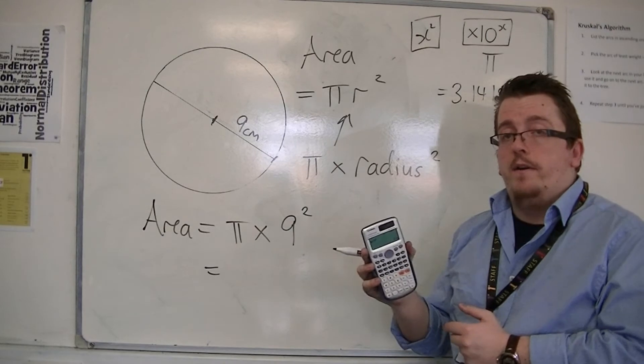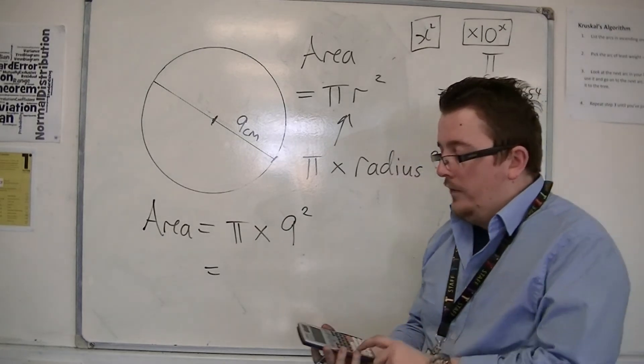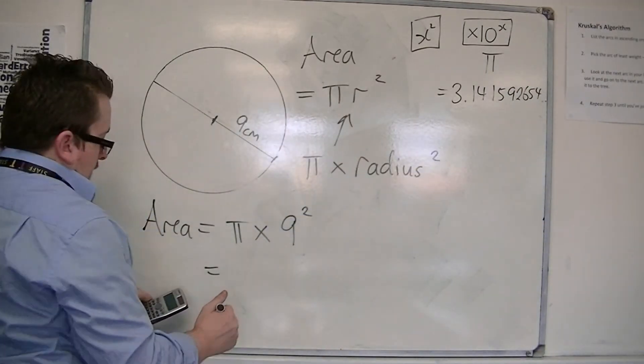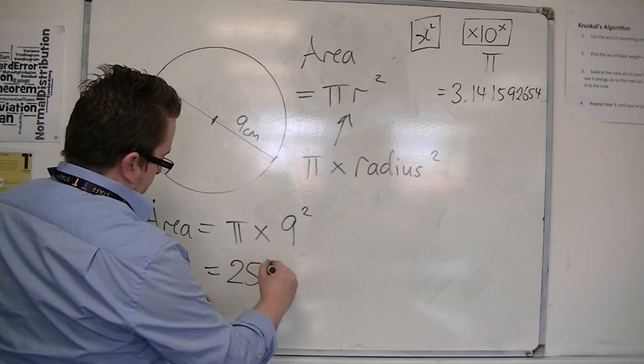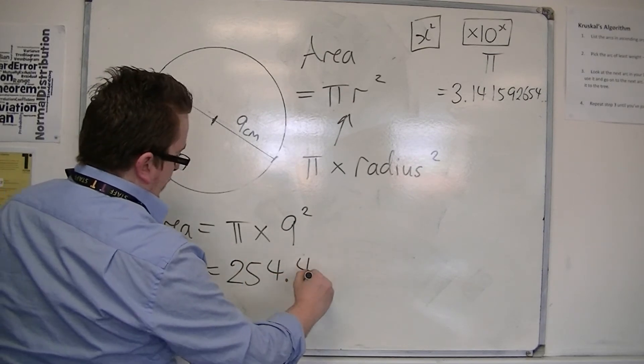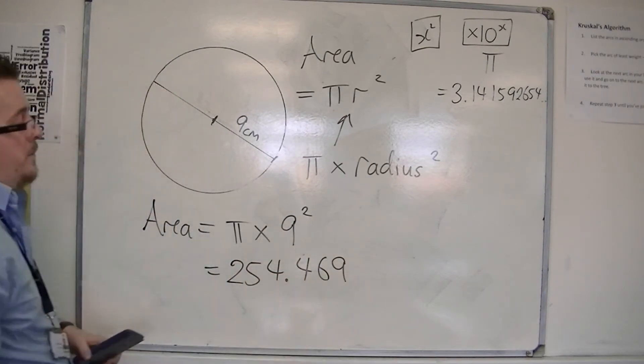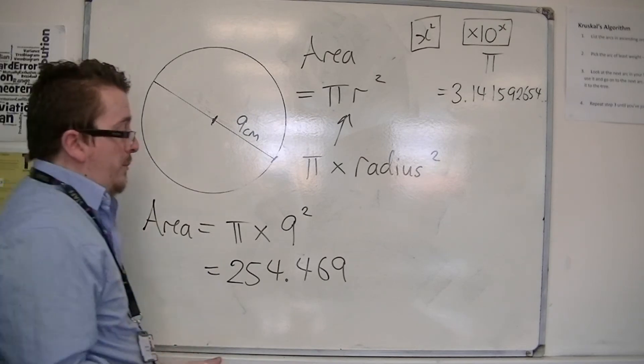Now you should get 81 pi arriving on your calculator. So then press the SD button, and you'll find you get 254.469. Now, that's to three decimal places.